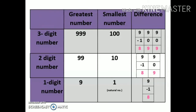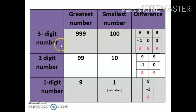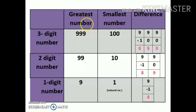Now look at this table very carefully. The greatest three-digit number is nine hundred ninety-nine, because after nine hundred ninety-nine comes the four-digit number one thousand. The smallest three-digit number is one hundred, because before one hundred is ninety-nine, which is a two-digit number. If they ask you to find the difference between the greatest and smallest three-digit numbers, you write the greatest number on top, subtract the smallest, and the difference is eight hundred ninety-nine.